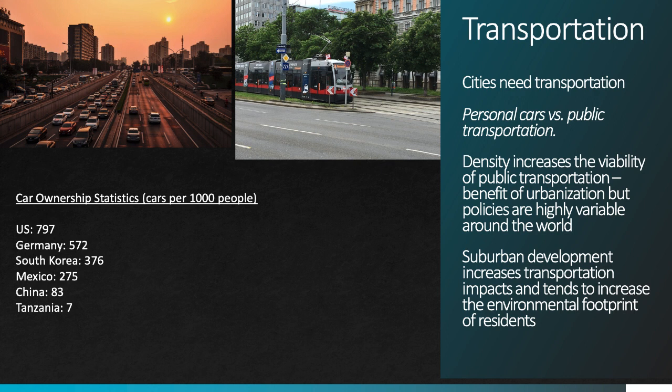The decision to develop public transportation in a specific way changes the nature of urban settings. The photo of the train here is from Vienna, Austria, where there's an exceptional public transportation system and a resident can very easily live without a car. These are choices that were made during the development of the city that now change the nature of life in that particular setting. The US has tended to focus far more than Europe on personal car transport, and part of that is due to the extensive nature of suburban development. Suburbs are the lower-density housing settings that ring cities, and they tend to increase transportation impacts as well as the average environmental footprint of residents.